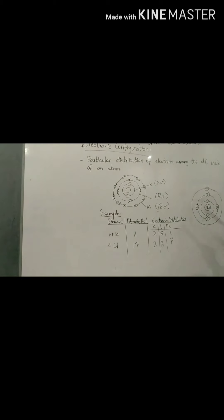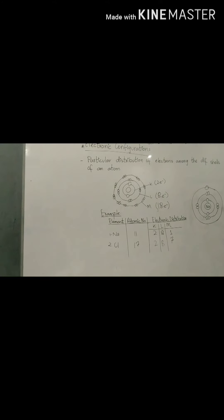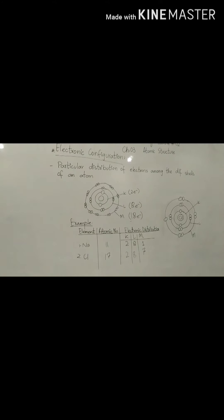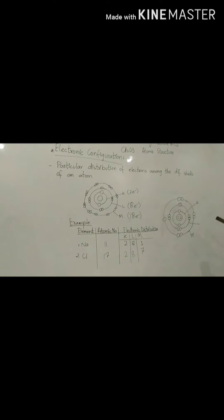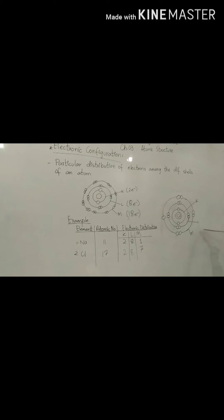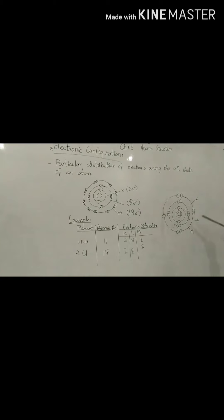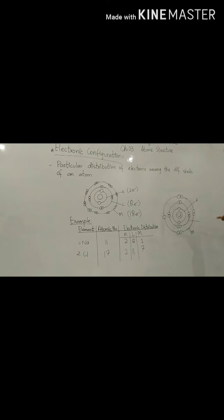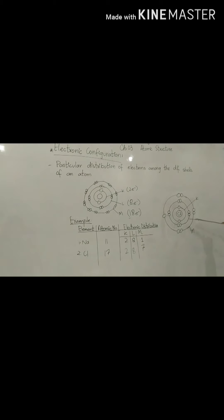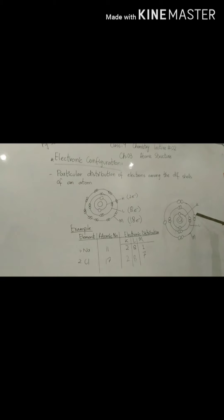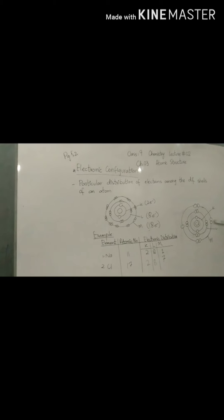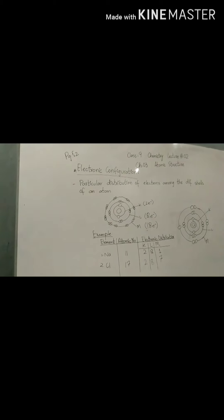You can also see the diagram. The diagram is the presentation. If you look at the diagram, you can see the diagram. K has 2 electrons, L has 8 electrons, M has 7 electrons. We can make two pairs. We can make a particular selection.